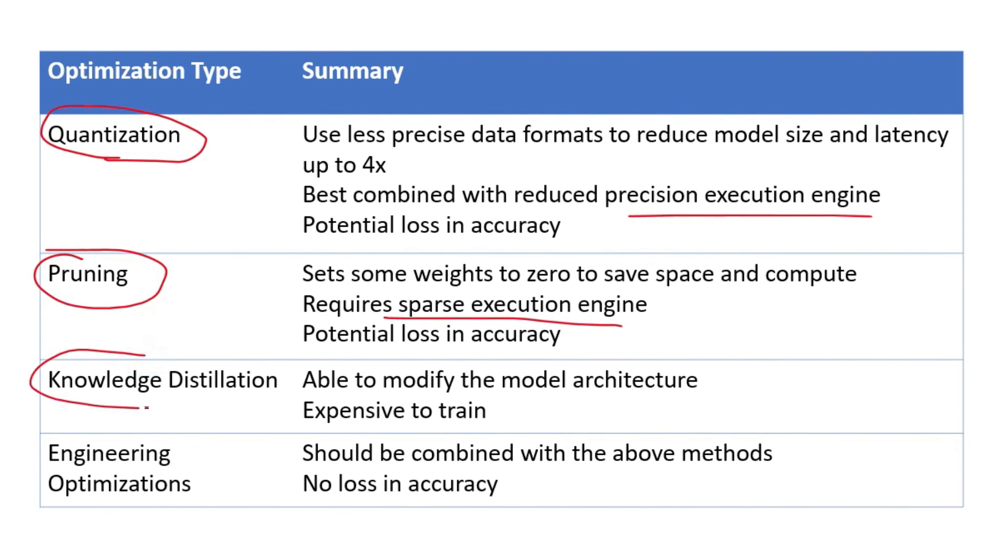Knowledge distillation is the only method we've covered where you're able to modify the model's architecture. So the impact of this is varied depending on how you modify the architecture, but can potentially be much larger than any other method. The downside of knowledge distillation is it's relatively expensive to train. And finally, engineering optimizations. These should be used in combination with all of the above methods. And you should expect no loss in accuracy when employing engineering optimizations because the output should be identical.